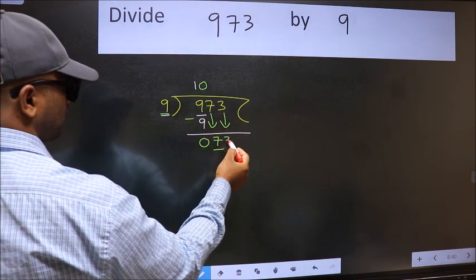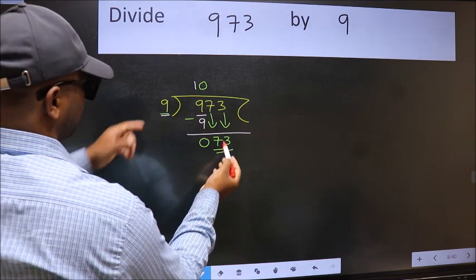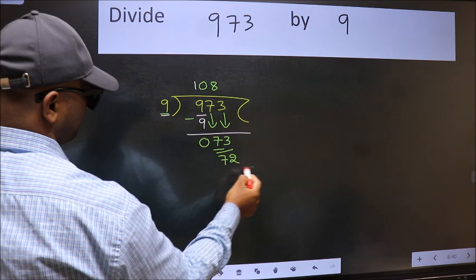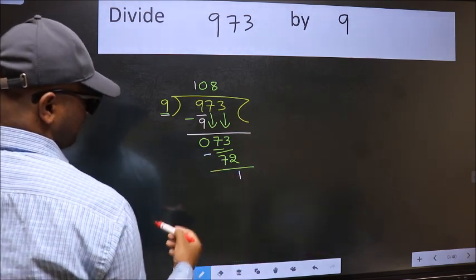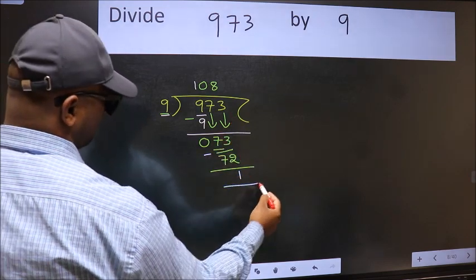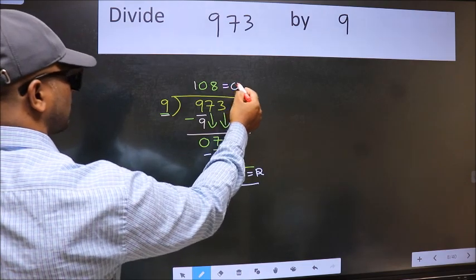Now 73. A number close to 73 in the 9 times table is 9 times 8 equals 72. Now we subtract and get 1. No more numbers to bring down, so we stop here. This is our remainder, and this is our quotient.